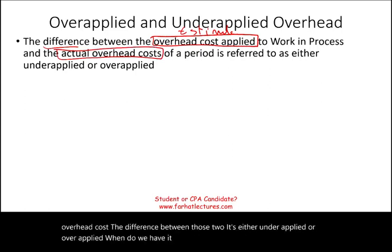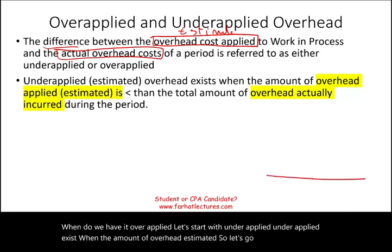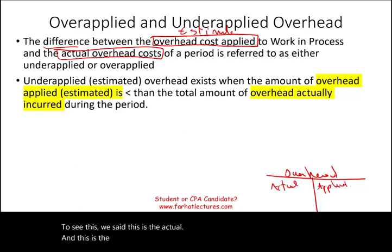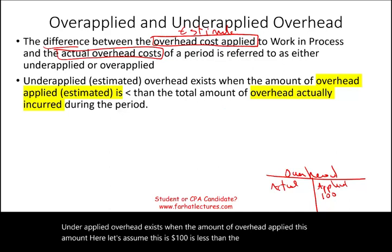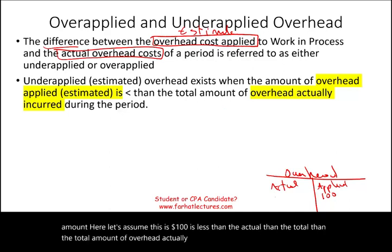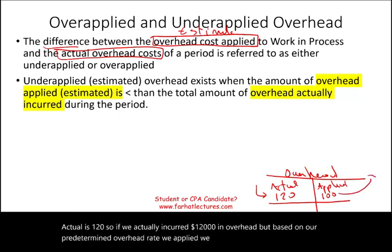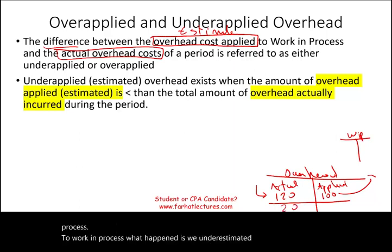Under-applied overhead exists when the amount of overhead applied is less than the actual overhead incurred. For example, if we applied $100 to work in process but the actual overhead incurred was $120, we underestimated. The actual was higher, so there is an under-applied difference of $20.